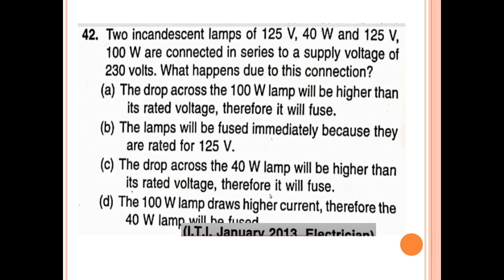42nd question: Two incandescent lamps rated 125 volt, 40 watt and 125 volt, 100 watt are connected in series across a 230 volt supply. The voltage drop across the 40 watt lamp is higher than its rated voltage, therefore it will fuse.